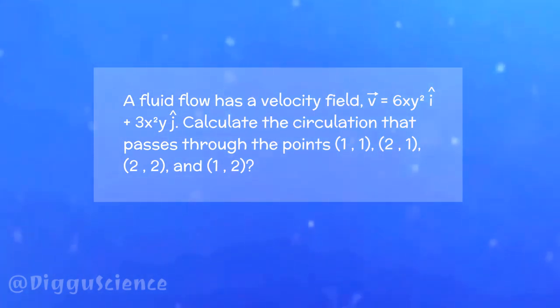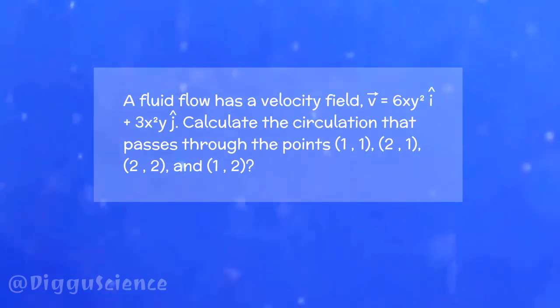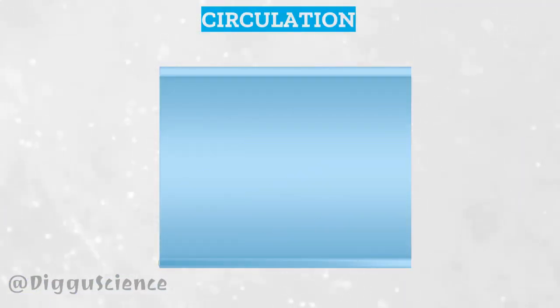The circulation passes through four different points as seen on your screen. I think this question is quite simple. Before entering the discussion sheet, maybe you don't remember the circulation formula.